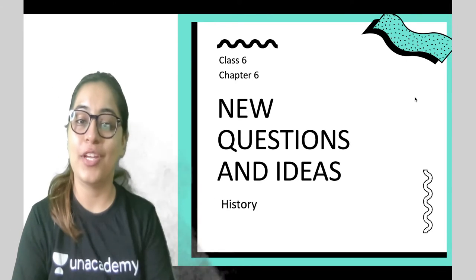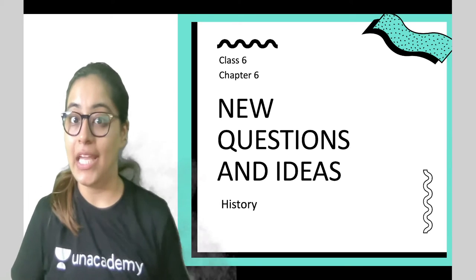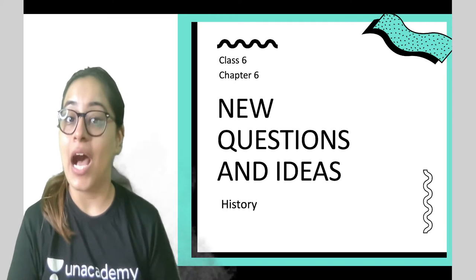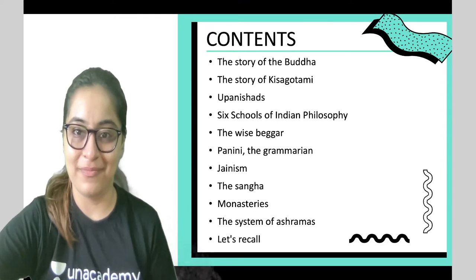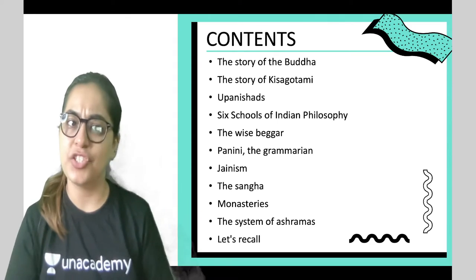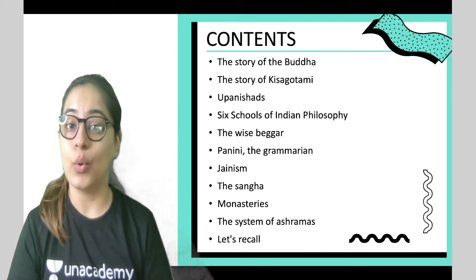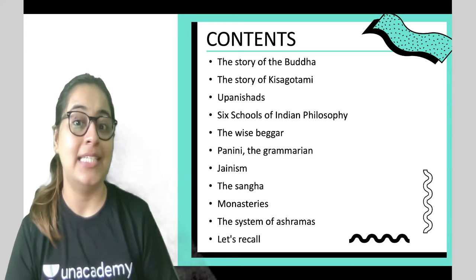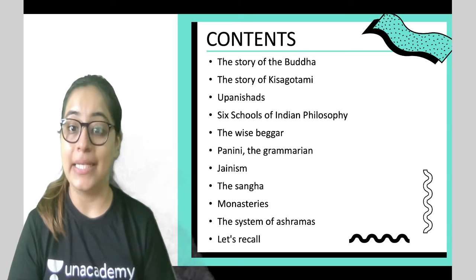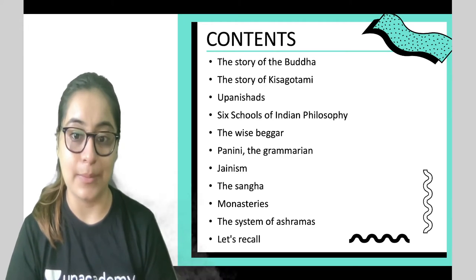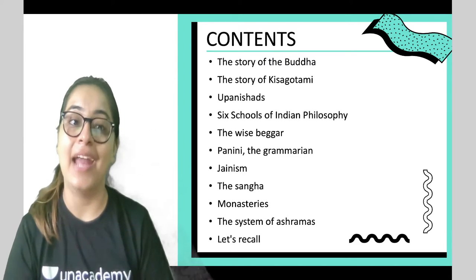Hi everyone, I'm your educator Sonali and welcome to your next lesson with me. Today we are going to cover Class 6 Chapter 6 History: New Questions and Ideas. Today's contents include the story of Buddha, the story of Kisagotami, Upanishads, six schools of Indian philosophy, the wise beggar, Panini the grammarian, Jainism, the Sangha, monasteries, the system of ashrams, and revision.